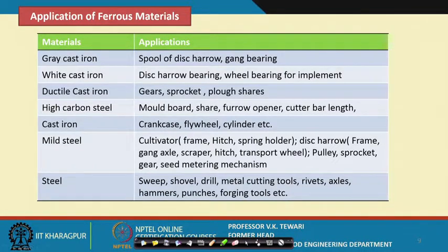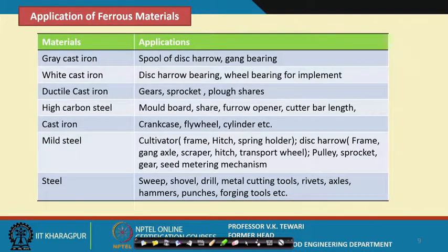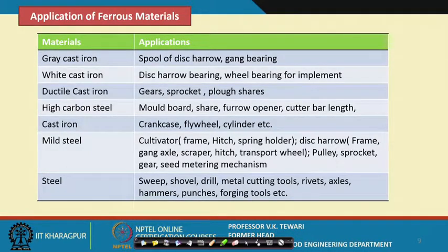Regarding application of ferrous materials, iron is the major content. A list with corresponding applications is given. Gray cast iron, white cast iron, ductile cast iron, cast iron, mild steel, and various steels and their respective applications are listed here in a nutshell. This will help you in understanding and choosing the right material during construction or design based on the specific requirements of the equipment.